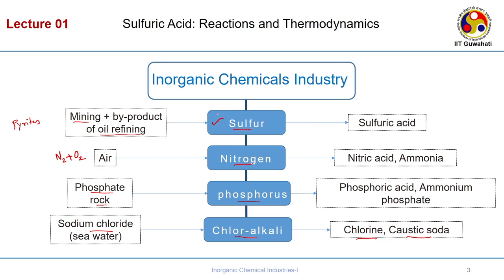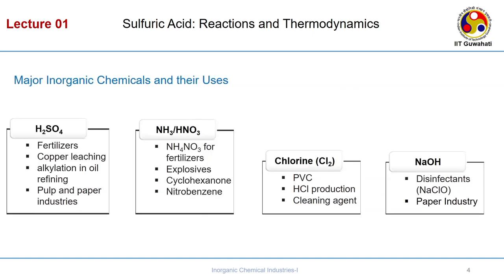We start with sulfuric acid and its uses among the major inorganic chemicals. Sulfuric acid and ammonia or nitric acid are commonly used for fertilizers. Sulfuric acid is also used for copper leaching and alkylation in oil refining — where it serves as an acid catalyst to form alkyl groups — and in pulp and paper industries.